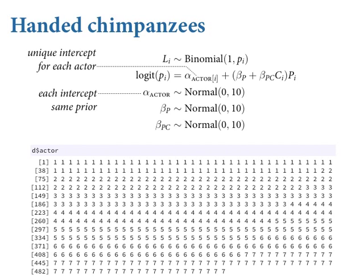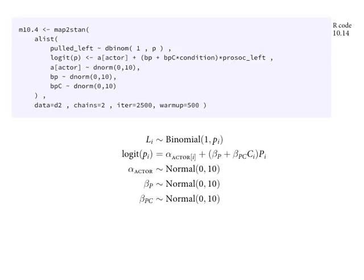If actor is a factor, convert it to an integer. There's a convenience function in the rethinking package called coerce_index — you can give it a factor and it makes it into a list of unique integers starting at 1. You don't have to tell R that it's not a continuous variable; it just finds all the unique integer values. If they are a factor, make them into an index.